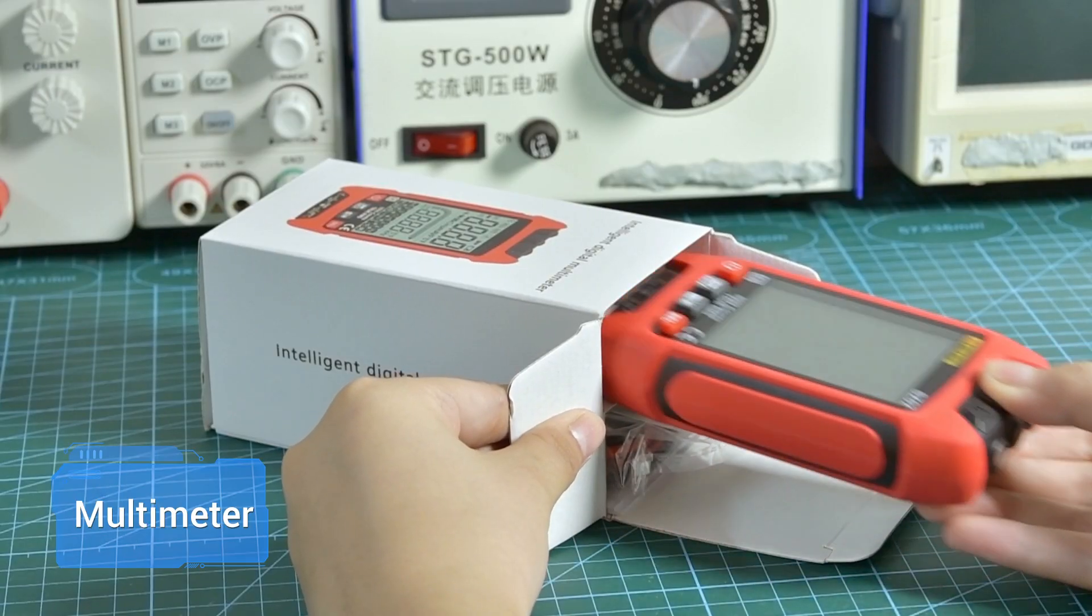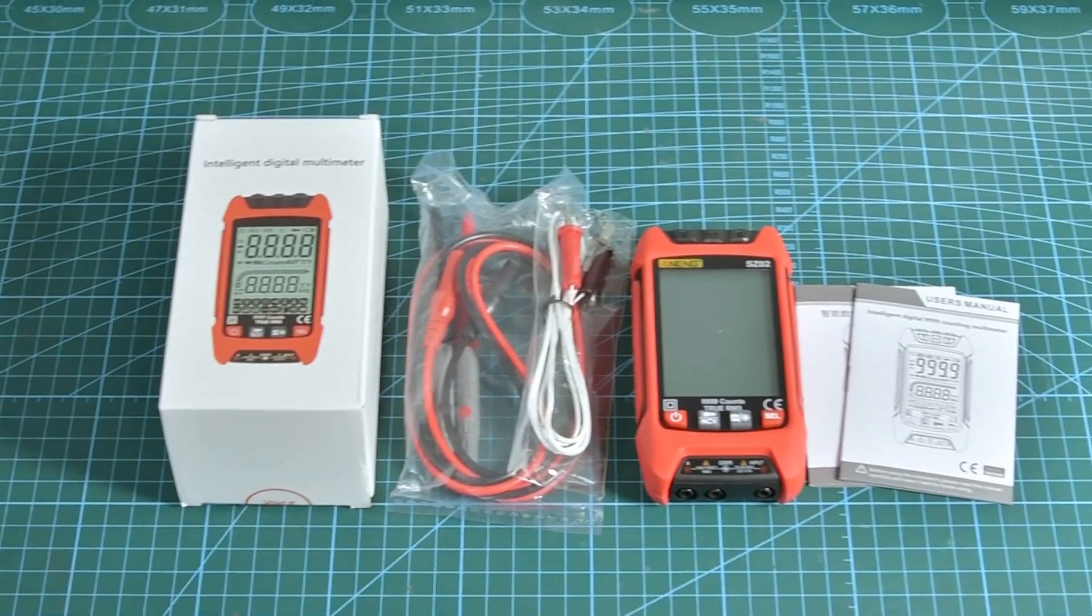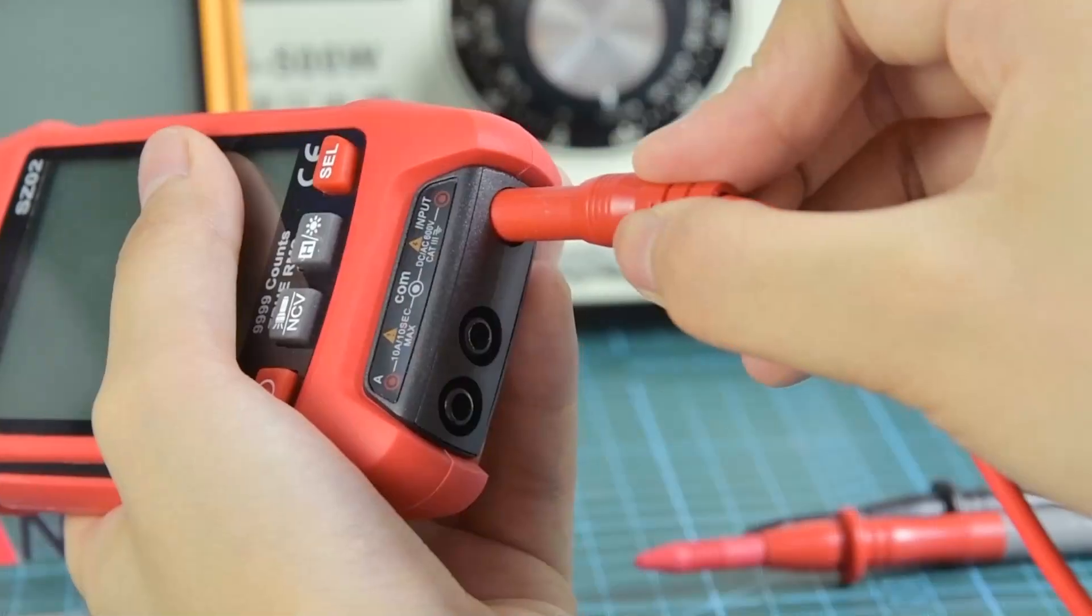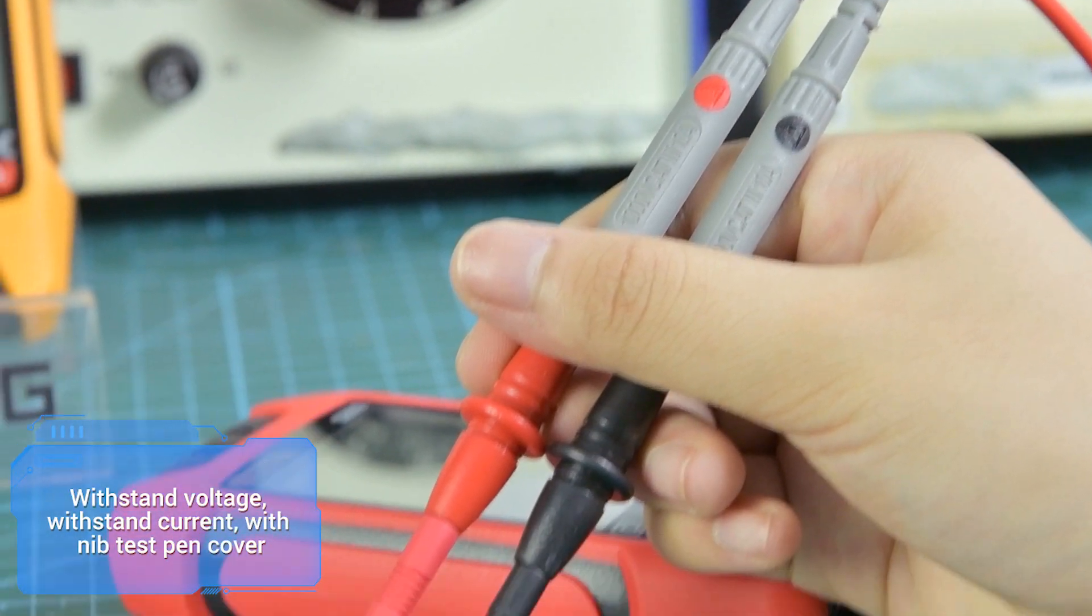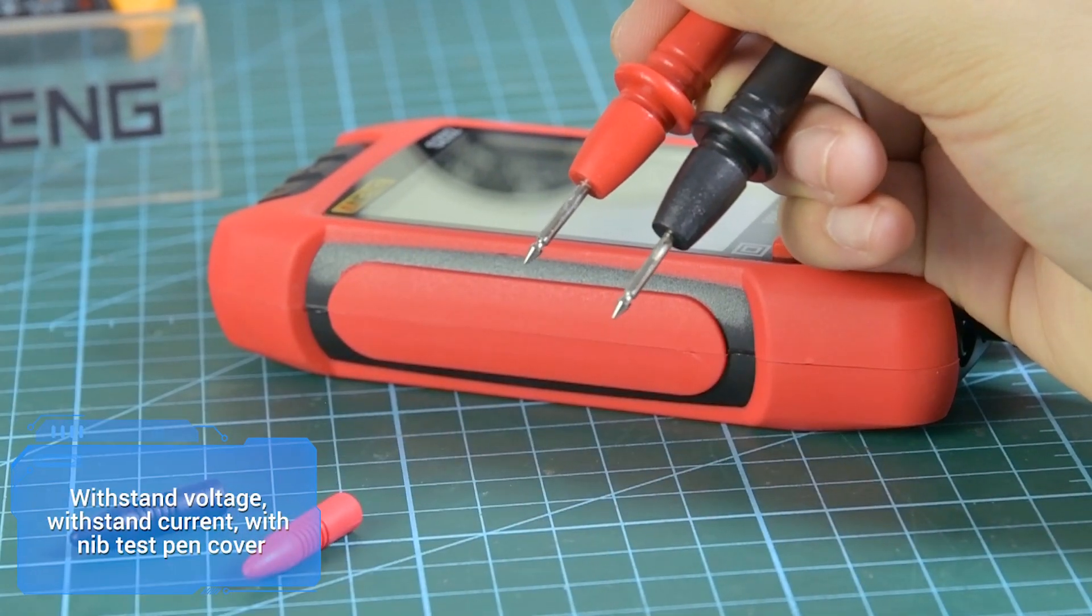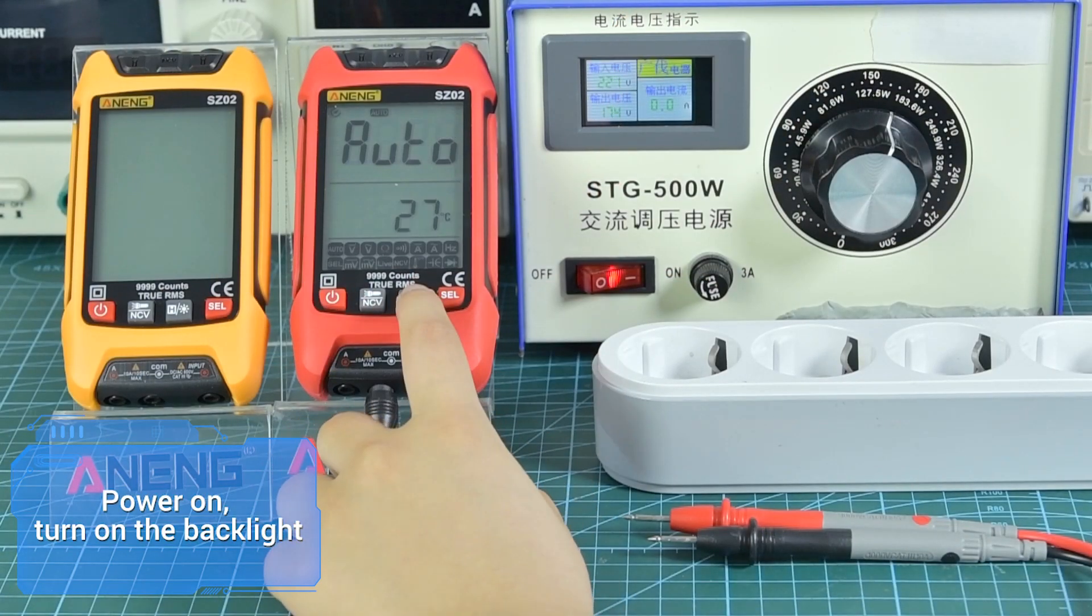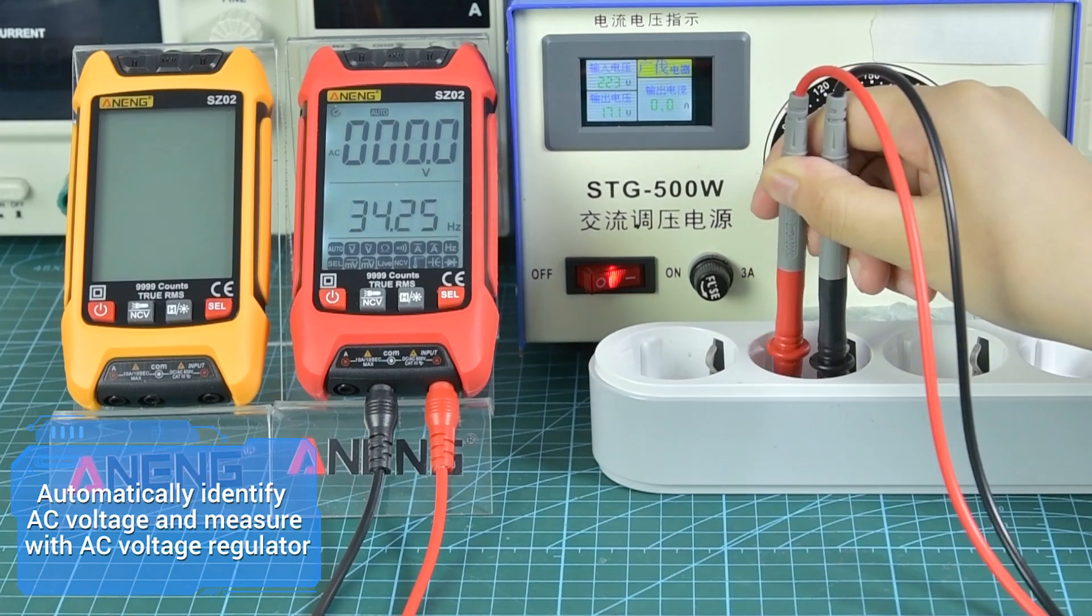This multimeter includes test leads, manual, and features high configuration with pen tip protection cover. Insert the test leads into the corresponding jacks. Power on to turn on the backlight. The multimeter can automatically identify AC voltage and measure with high voltage resistance and current resistance capabilities.